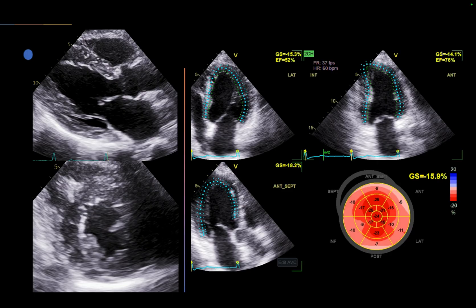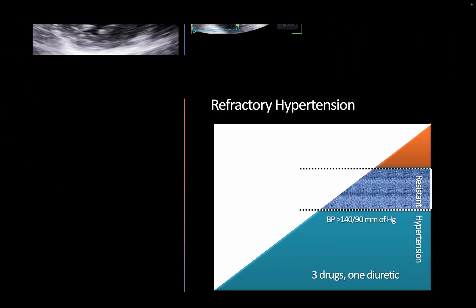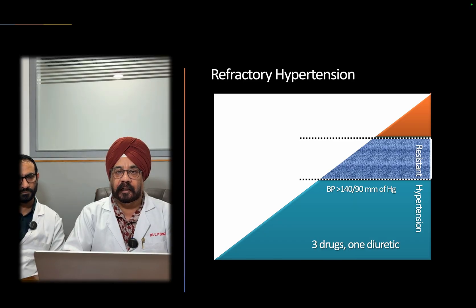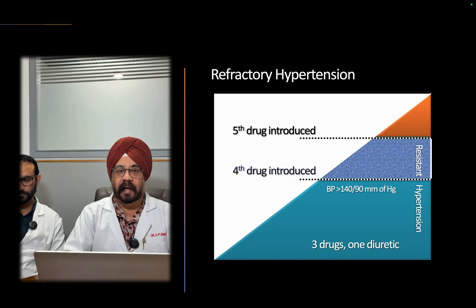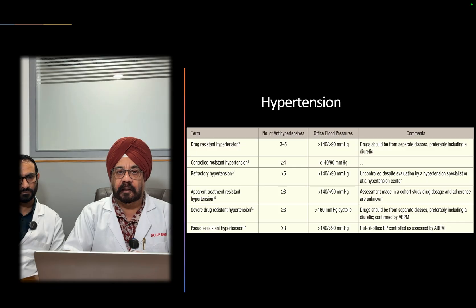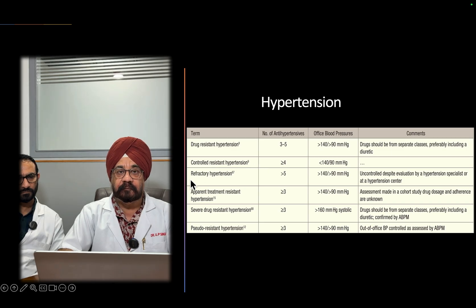This patient is categorized as resistant hypertension — BP more than 140/90 requiring an additional drug. If BP is controlled on four drugs it is controlled resistant hypertension; if not, it becomes refractory hypertension. By international guidelines, this patient with four medicines and still uncontrolled BP qualifies as refractory hypertension.